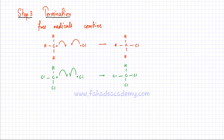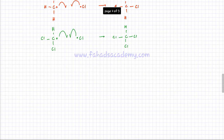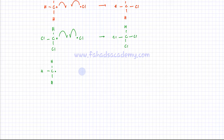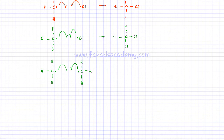Let's do a few more examples. We can have two methyl radicals: I have a CH3 radical which needs one more bond, and I have another CH3 radical which also needs one more bond. So they both can join with each other and they could end up forming a molecule of ethane — the two methyl radicals can join up.